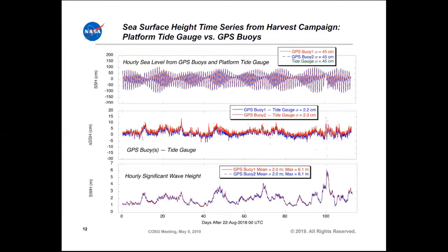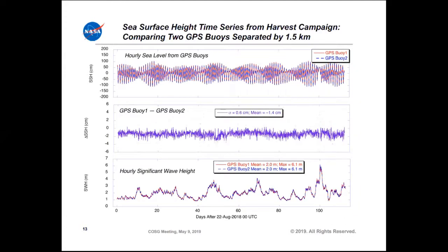We feel very comfortable with the results up to about significant wave heights of four meters. After that, it gets a little dodgy with this particular platform. There is some systematic error related to wave height that remains in both solutions — some of this could be from the tide gauge, which is difficult to measure at the platform because of waves, and some is probably due to the buoy. If you look at the differences between the two buoys, they are at the sub-centimeter level, so in terms of relative positioning and height, it's very accurate.